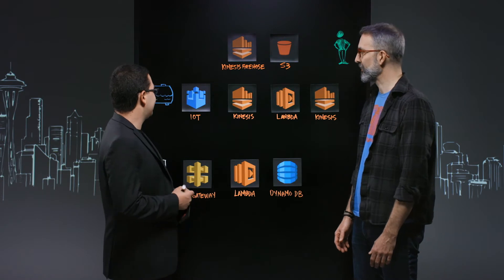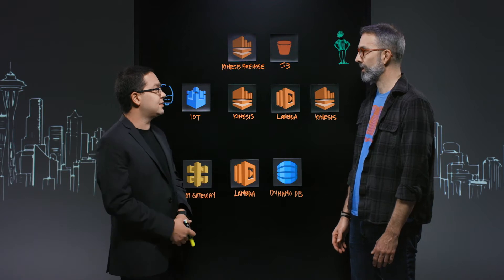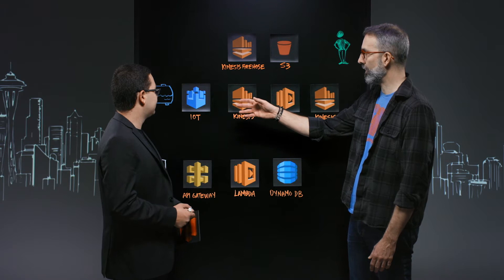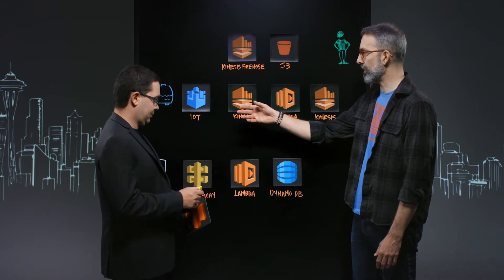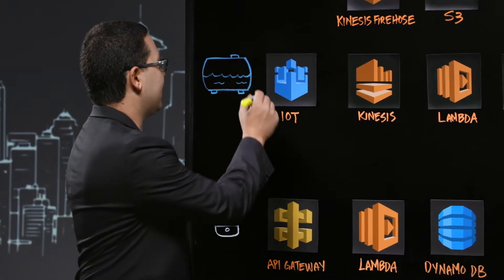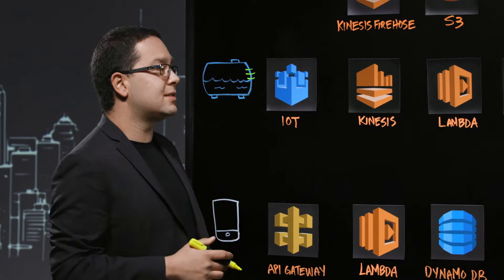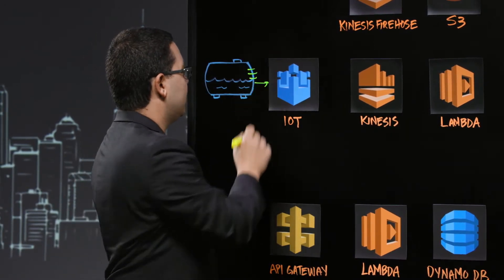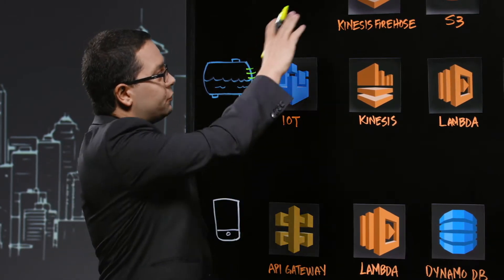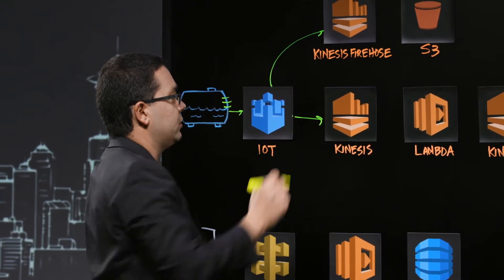This is a project for a company that has tanks, and we need to monitor the fill level of these tanks. We have instrumented these tanks with fill level sensors, and we know how full they are. We connect over TLS via MQTT to the IoT service, and then in the IoT service we route to two different rules — one up to Firehose and one over to a Kinesis stream.